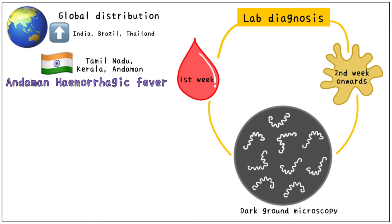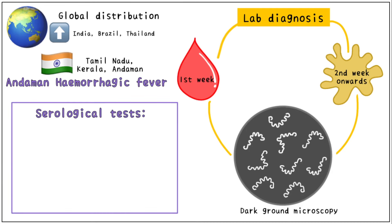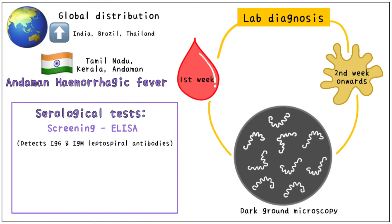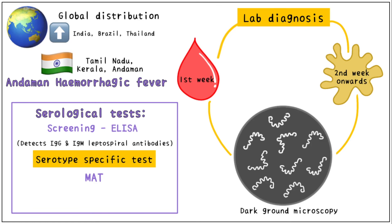Dark ground microscopy is the best method to visualize these organisms, as they are too thin to be clearly visible under other stains. For serological diagnosis, screening tests such as ELISA detect IgG and IgM leptospiral antibodies. The best serotype-specific test is MAT — Microscopic Agglutination Test — which is the gold standard for diagnosis of Leptospira.